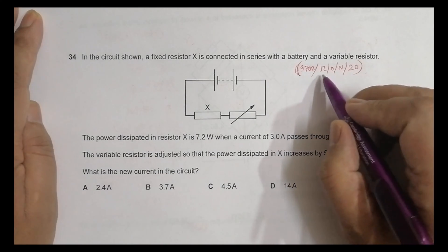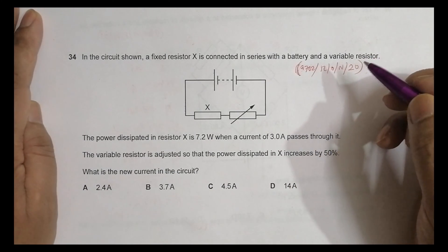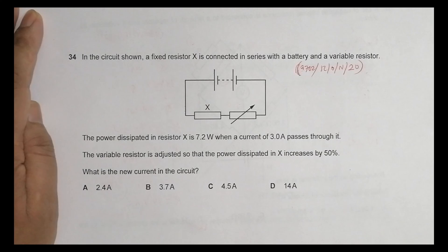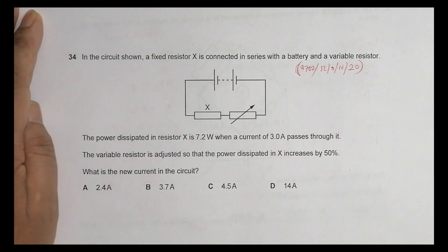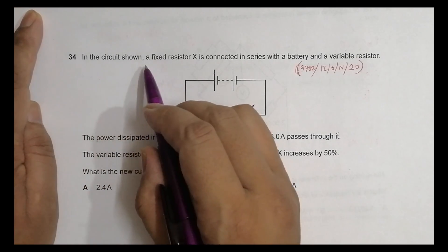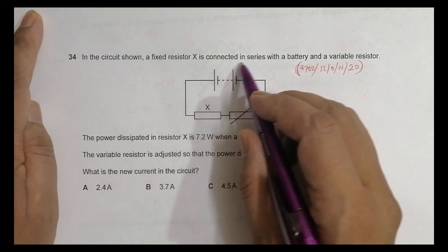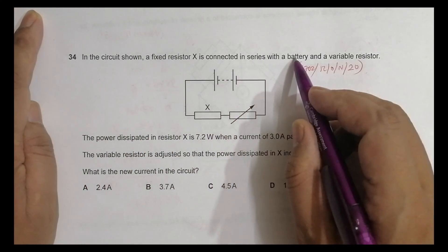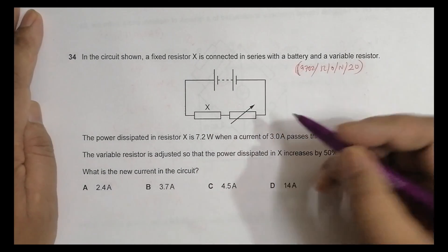Hello folks, this is the 2020 October/November Paper 1-2, question number 34. It is concerned with the chapter on current electricity, as you can see from the cells and resistors in the circuit shown. A fixed resistor X is connected in series with a battery and a variable resistor.